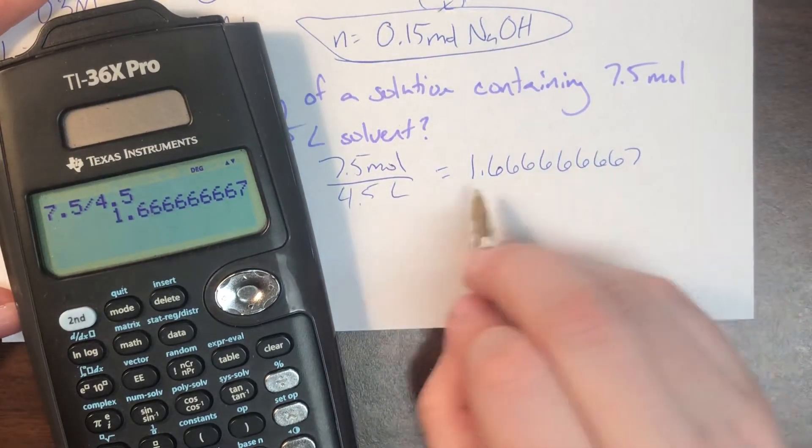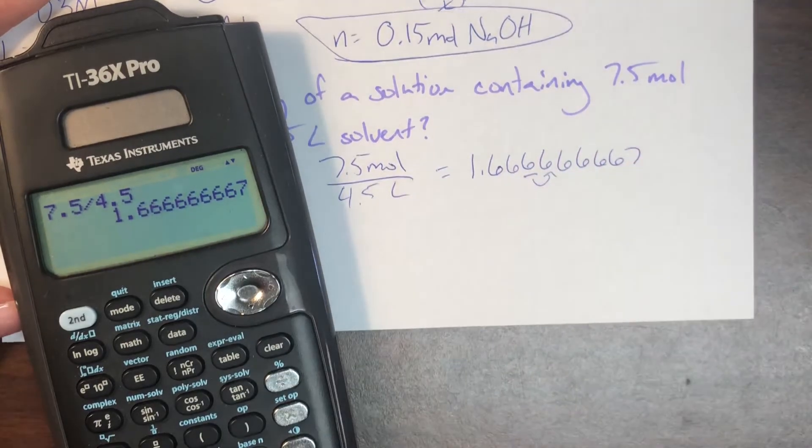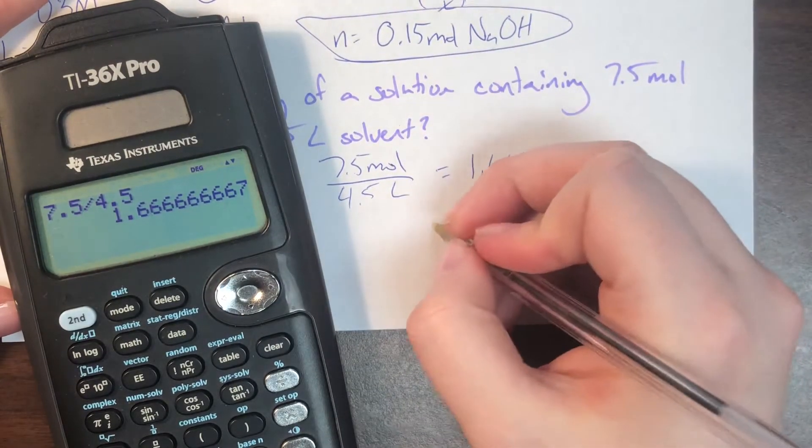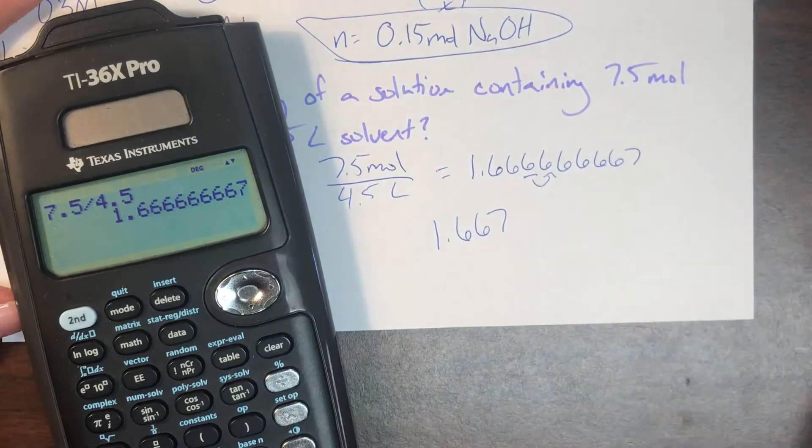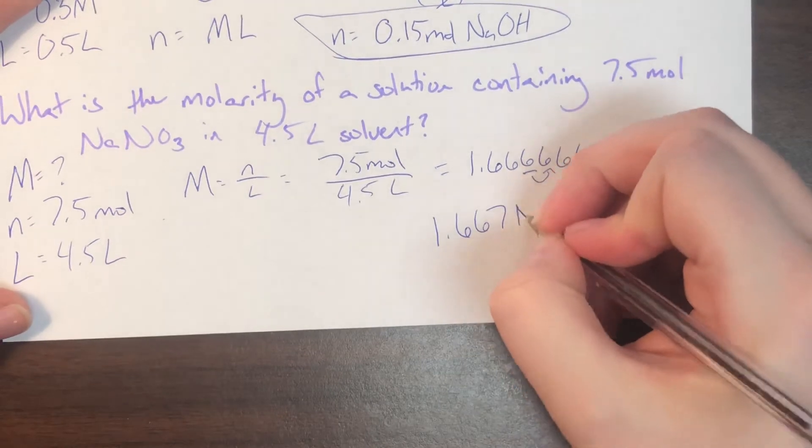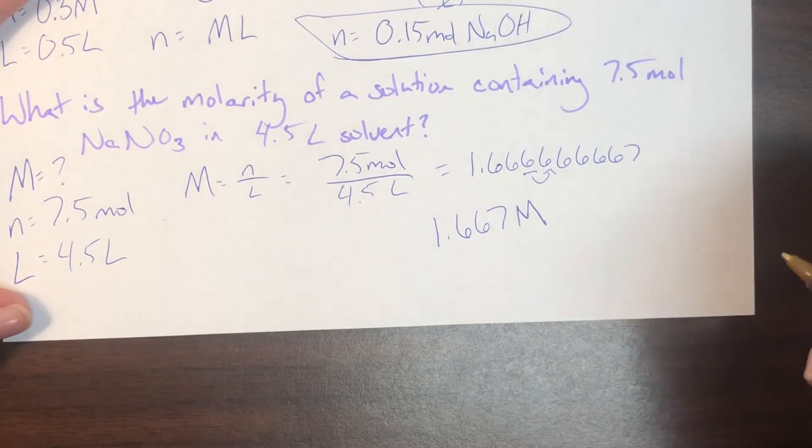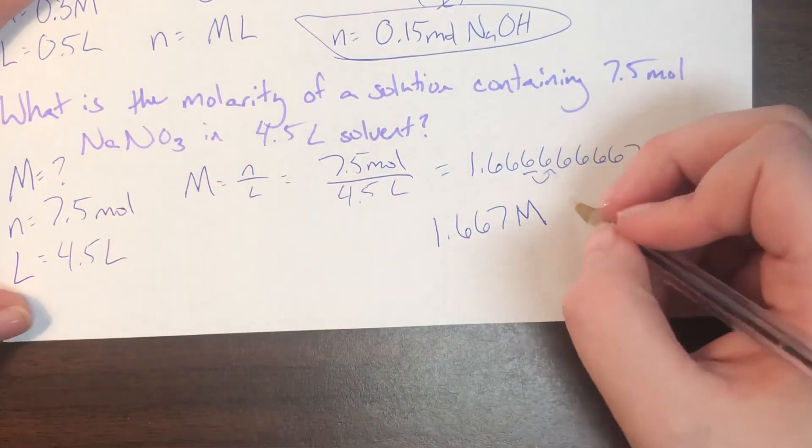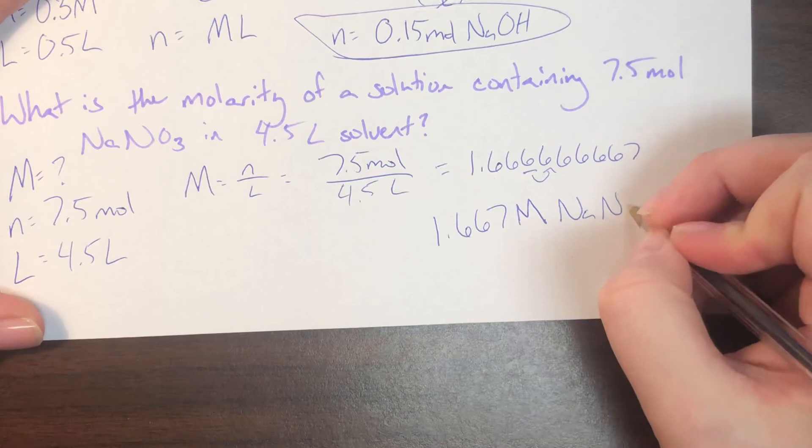So 7.5 divided by 4.5 gives me the number 1.66666666667. Lots of sixes. And I'll round it to three decimals. Six does, in fact, make me round up. So my final box answer would be 1.667. And then it is going to be in the unit molar. Also, you could say moles per liter. Remember, they're the exact same thing. And then I'll specify of what kind of solute. So that's going to be sodium nitrate.